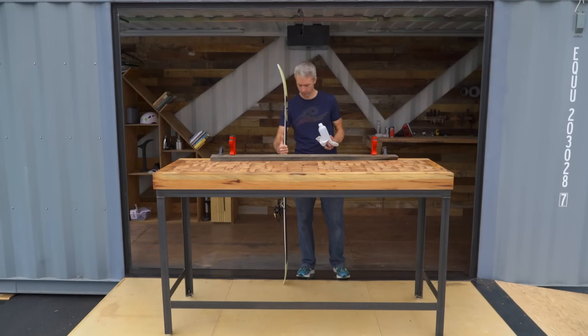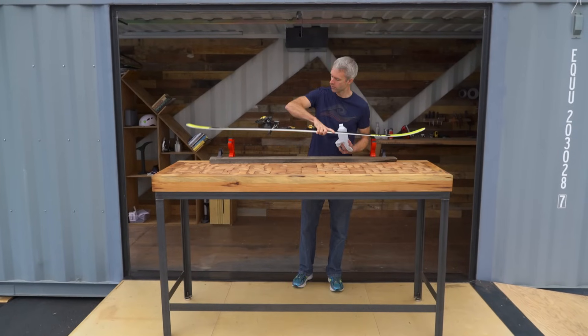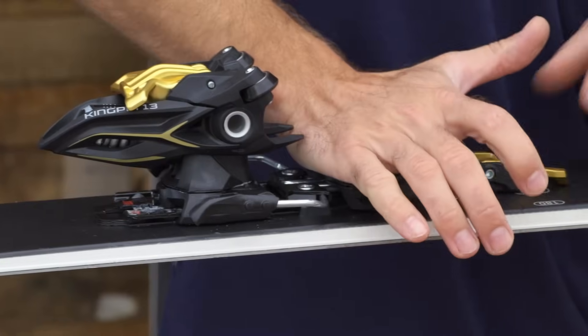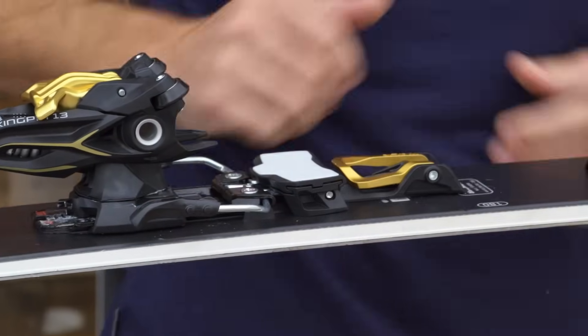Place your skis on your ski vise. If you don't have a vise, you can use a couple stacks of books to balance your ski. Be sure to lock your ski brakes up and out of the way. You may need a rubber band for this.